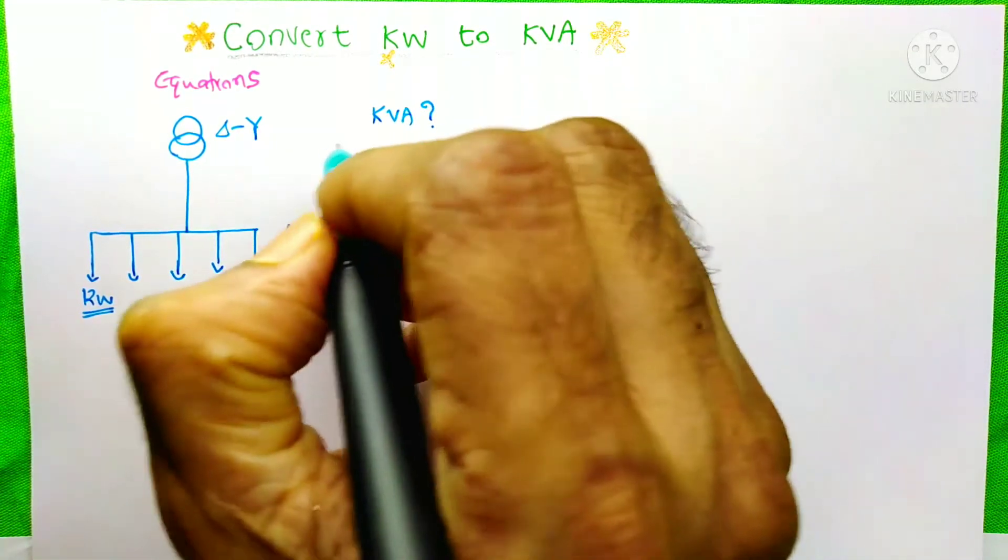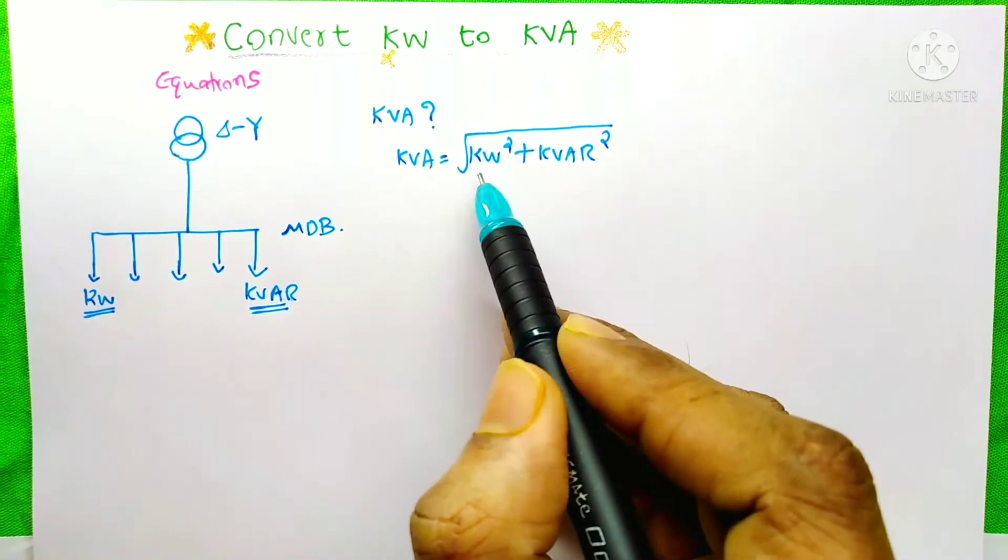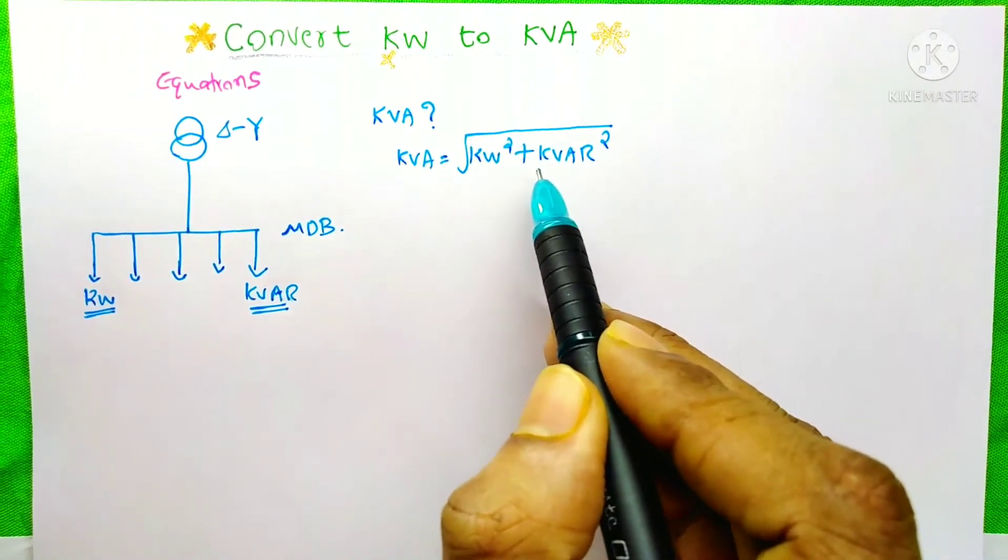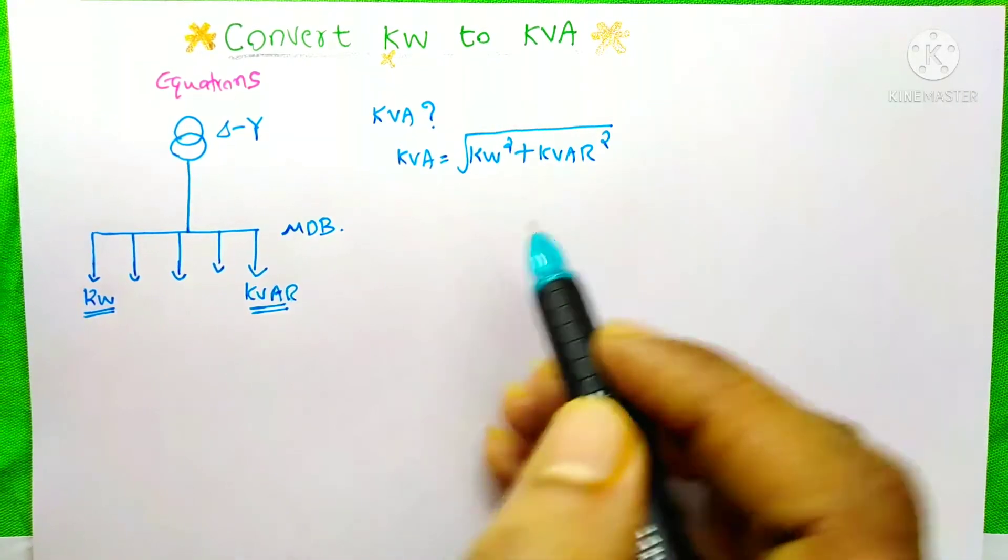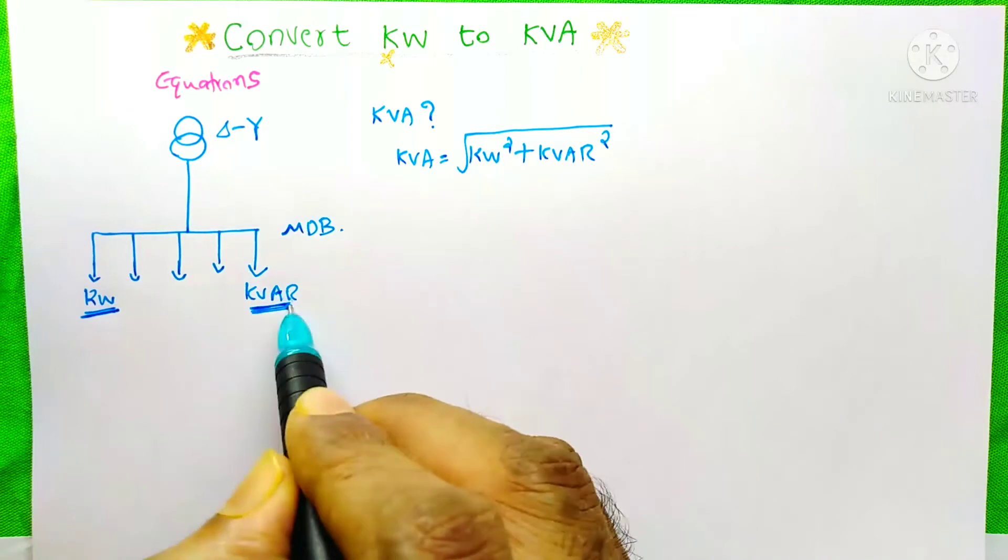So in this situation which equation will we use. Here we use this equation: kVA equals root of kW squared plus kVAR squared. Because the things available in this situation are kW and kVAR.